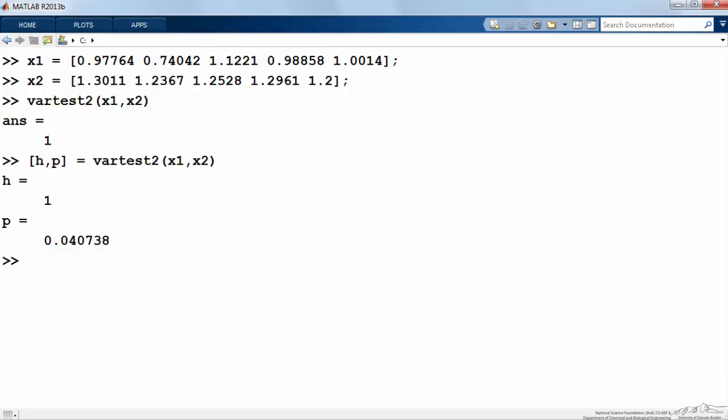The vartest will default to alpha equal 0.05. If I change it, I can also say, let's say alpha, let's set alpha equal to 0.01 for example. Now when I run it, the p value is greater than 0.01, and this means that with a value of alpha of 0.01 we cannot reject the null hypothesis, and we'll say the evidence now is not strong enough to indicate a difference in variance.